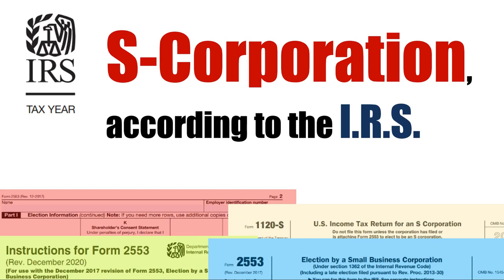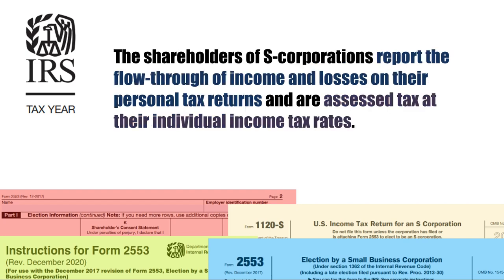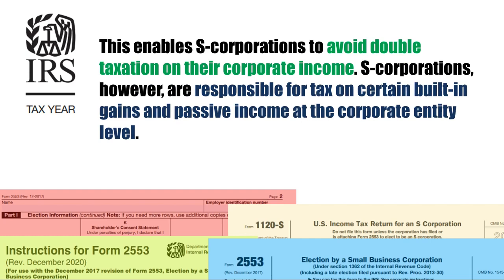What is an S-Corporation according to the IRS? The designation of S-Corporation status is conferred on those corporations that elect to pass corporate income, losses, deductions, and credits through to their shareholders for federal tax purposes. The shareholders of S-Corporations report the flow-through of income and losses on their personal tax returns and are assessed tax at their individual income tax rates. This enables S-Corporations to avoid double taxation on their corporate income.